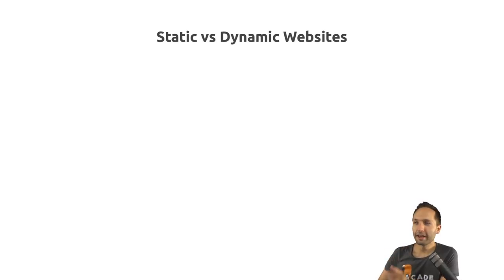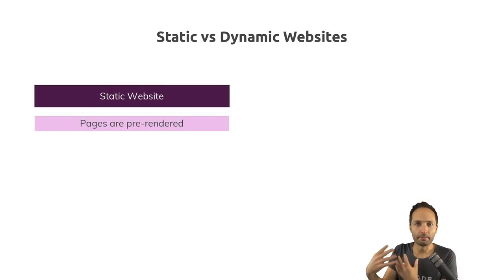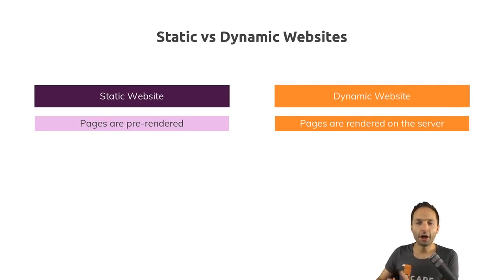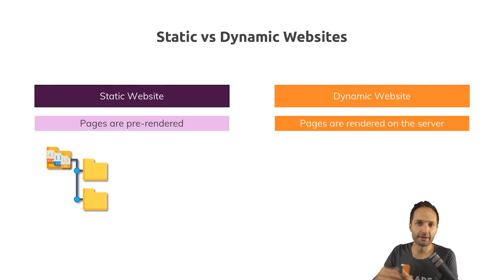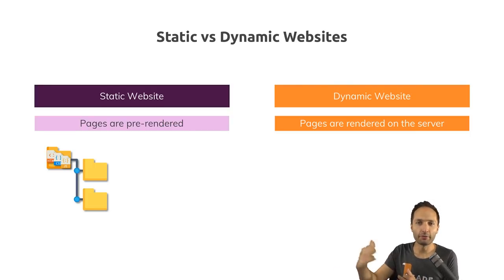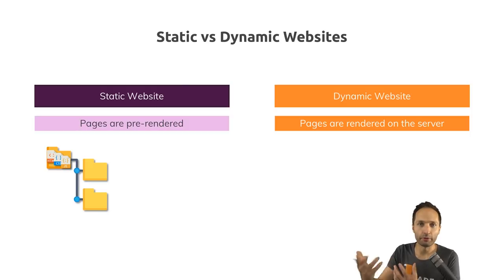Before we dive into the deployment, let's have a look at static versus dynamic websites. A static website simply means that the pages of our website are pre-rendered, and a dynamic website means that the pages are rendered on the server. In our case we have a static website because we basically created something like this: we have a starting page, and that starting page contains an HTML file, a CSS file, and some JavaScript. The only thing we have to do to deploy this static website is save these files on a server, because whenever a user wants to visit our website, he will send a GET request to the server and get back the code we created.